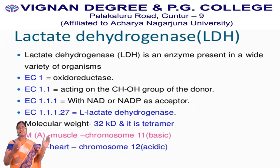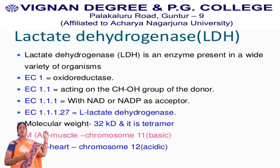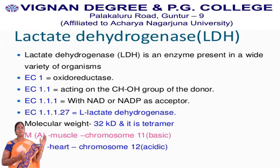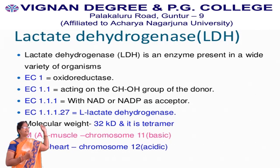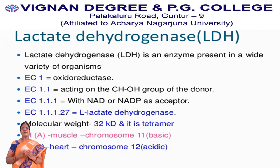Lactate dehydrogenase is an enzyme which is present in a wide variety of organisms. Coming to the classification of lactate dehydrogenase, it is given by enzyme code 1, which means it belongs to oxidoreductases. The EC number for lactate dehydrogenase is 1.1.1.27, which indicates it belongs to oxidoreductases.